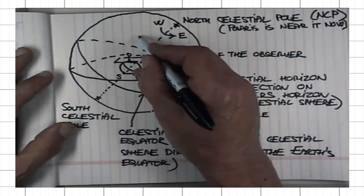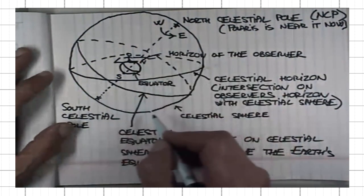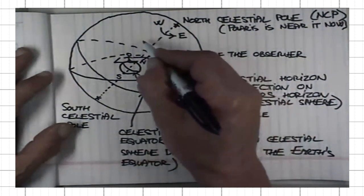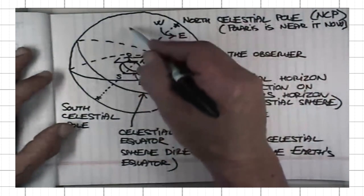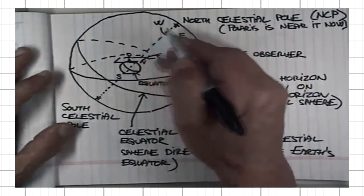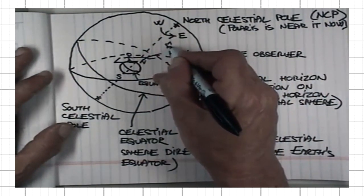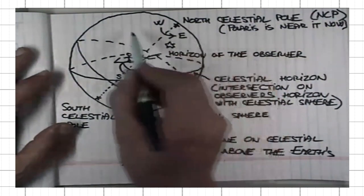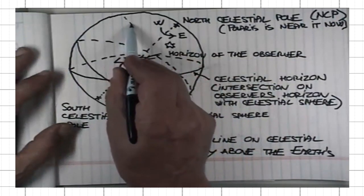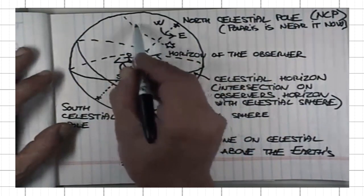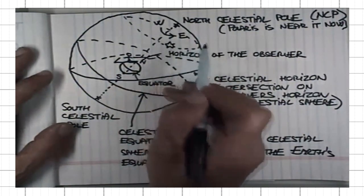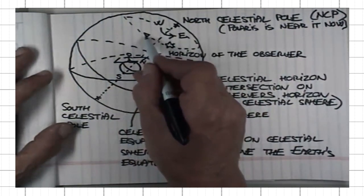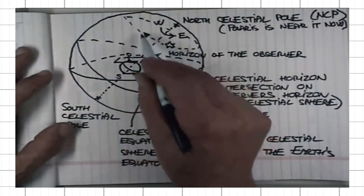Their trajectories on celestial sphere are parallel to the celestial equator. This would be, say, I have a star located somewhere here on celestial sphere. As the Earth spins, it would look to me that the star is moving along this circular path on celestial sphere from east to west.